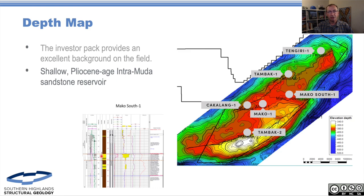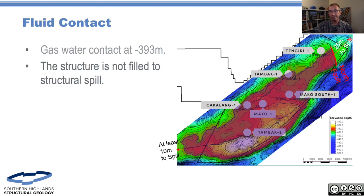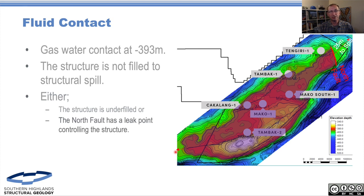It's a very recent Pleistocene Intermutter Reservoir and they've given us an idea of the stratigraphy — that's what we need. The gas water contact is marked on here so we can see where the fluid contact is. We can see our north fault. The structure is not filled to spill — you can see there's plenty of extra space up in the northeast and we've got at least 10 metres extra spill to the south. So either the structure is underfilled or the north fault is controlling the structure. There isn't a lot of relief, so that's why I've discounted top seal.